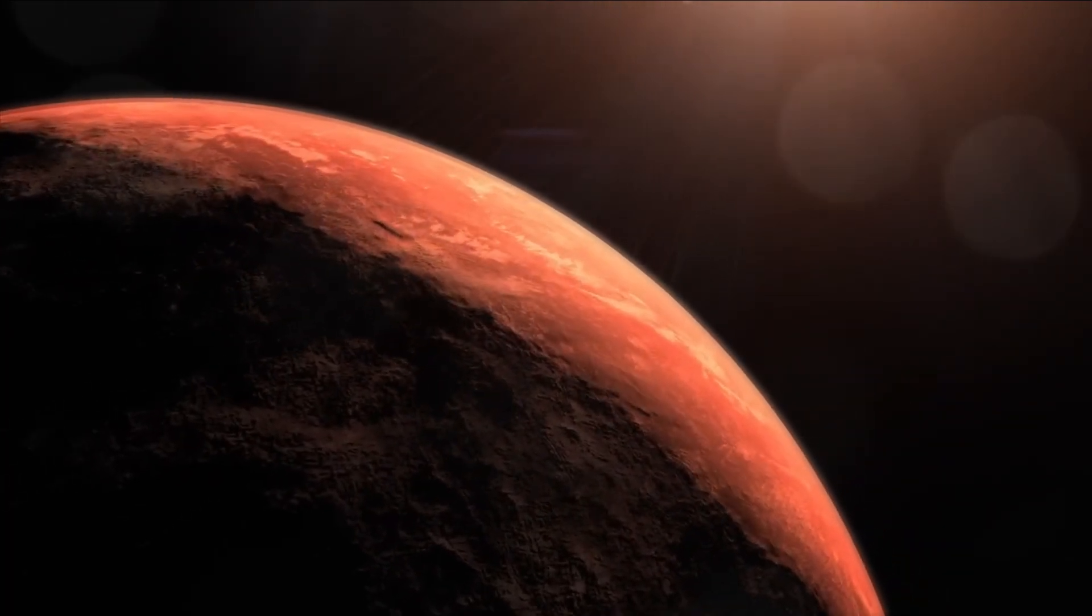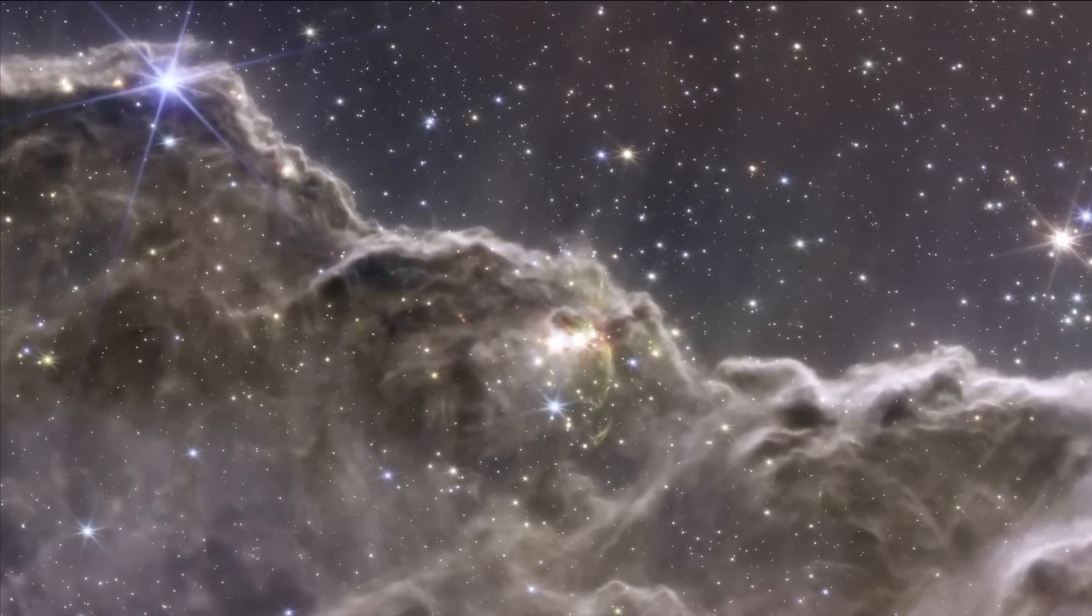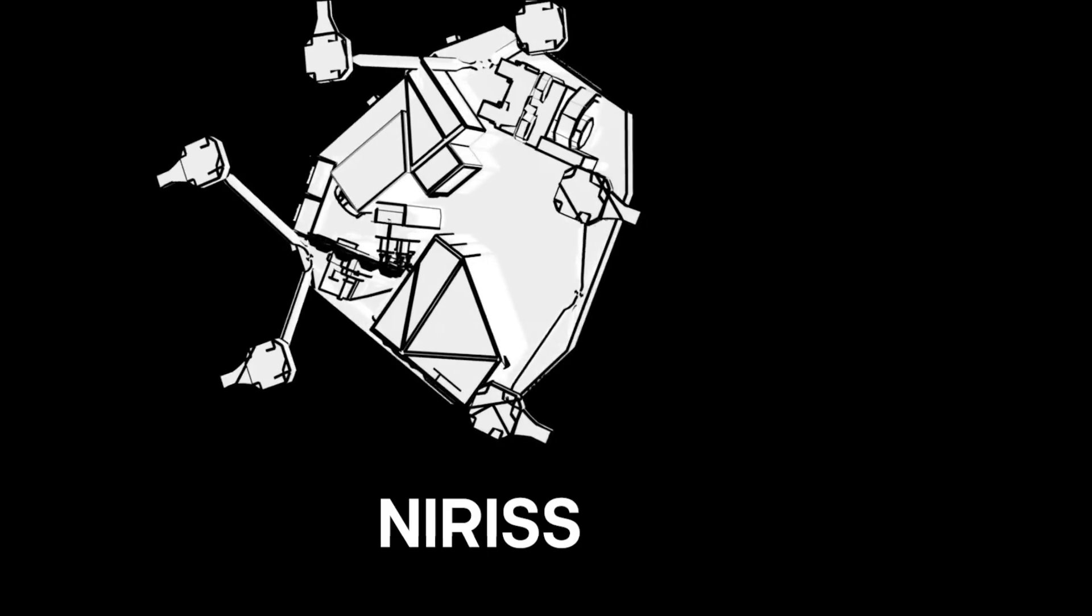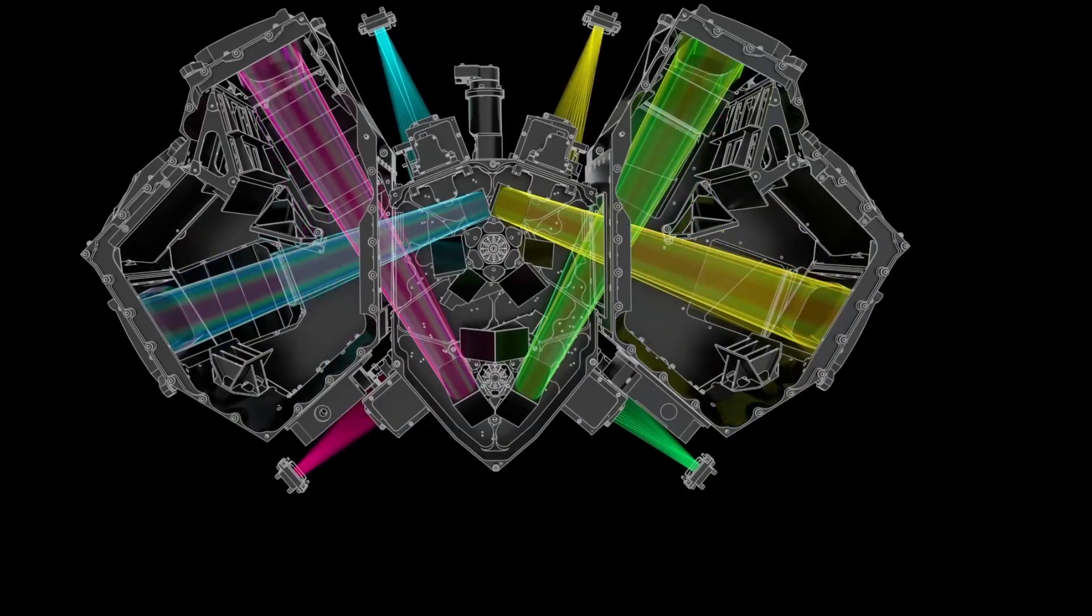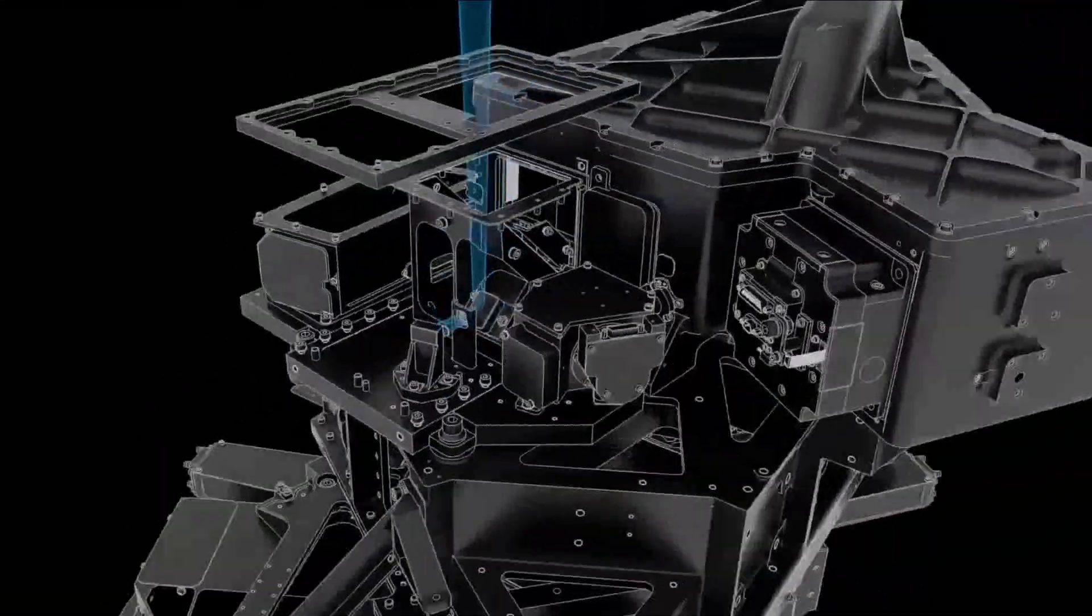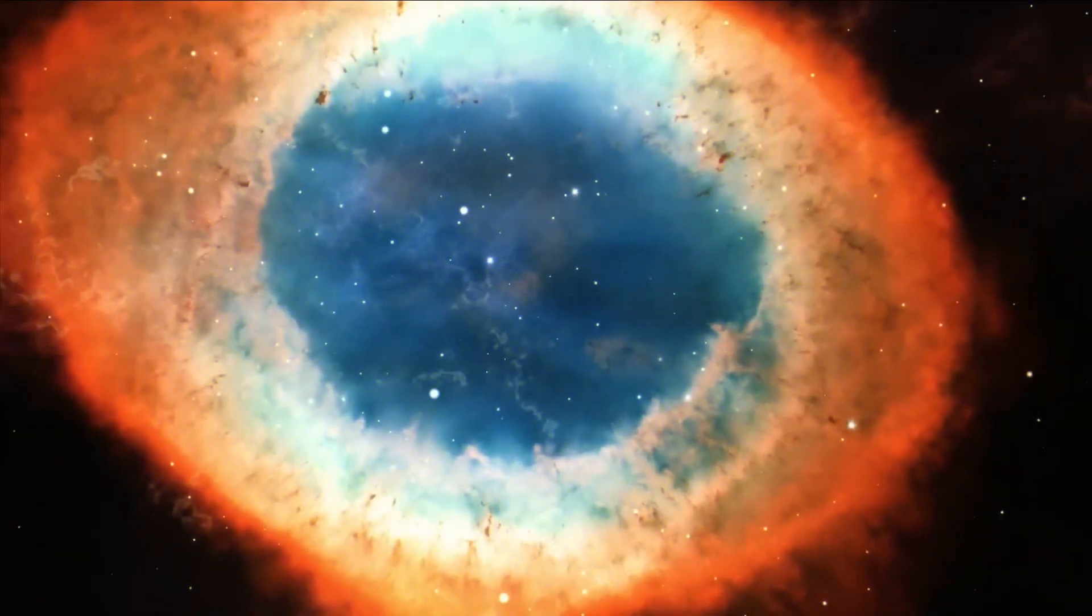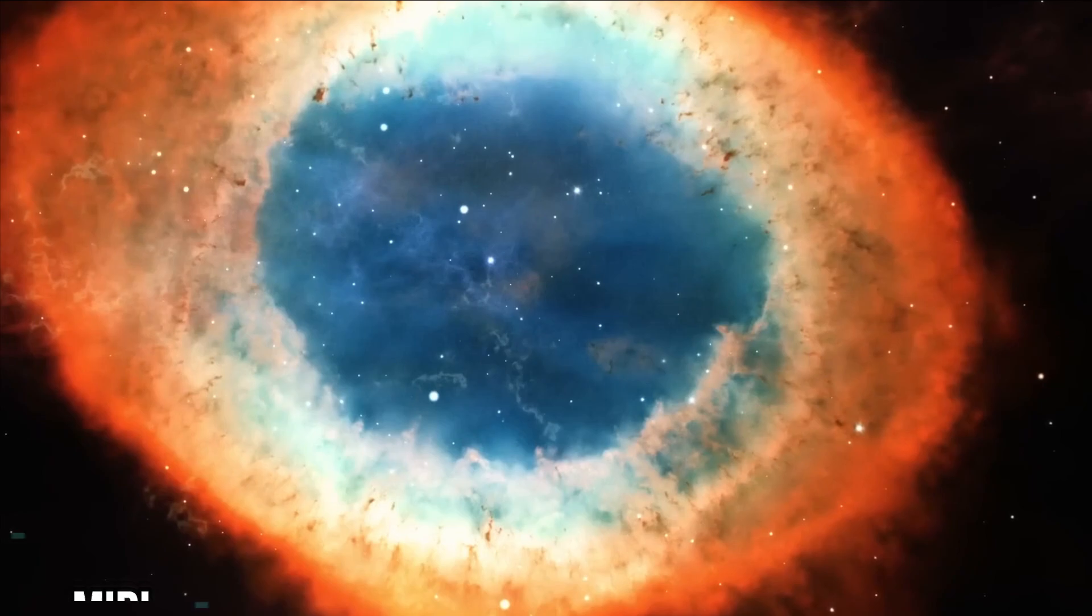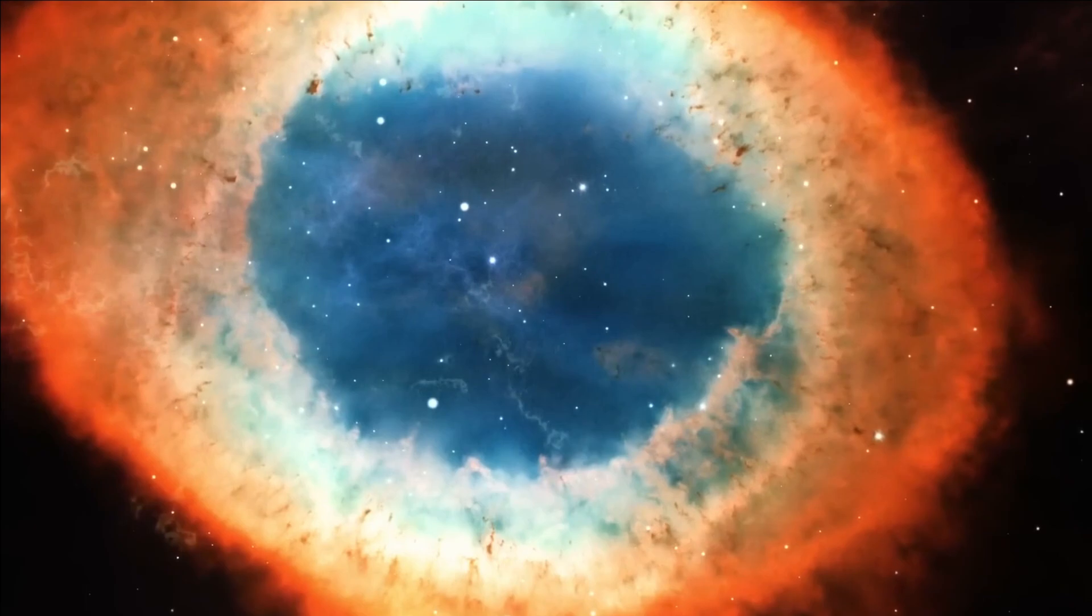This image showcases the exoplanet HIP 65426-b captured in different infrared lights, akin to utilizing various cameras on the James Webb Space Telescope. The purple depiction, taken at 3 micrometers with NIRCam, resembles using a purple filter. The blue representation, also from NIRCam but at 4.44 micrometers, mimics a blue filter. The yellow image is captured by another camera, MIRI, at 11.4 micrometers, akin to a yellow filter. Lastly, the red image, also from MIRI but at 15.5 micrometers, mirrors a red filter.